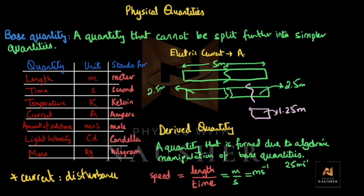So 25 meters per second tells you that you are covering a distance of 25 meters in one second. This one quantity gives you two different pieces of information — unlike a base quantity. When the unit changes, you get information about both distance and time.